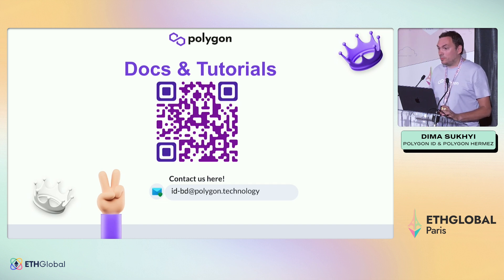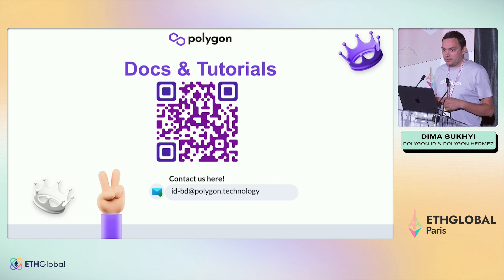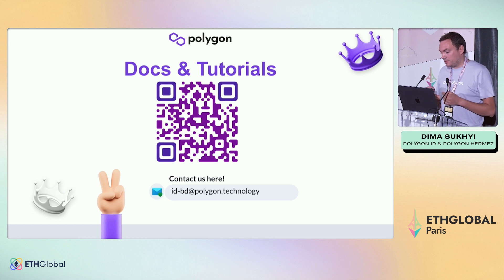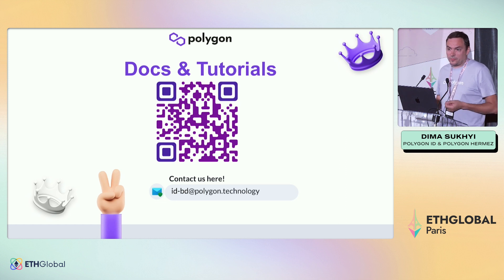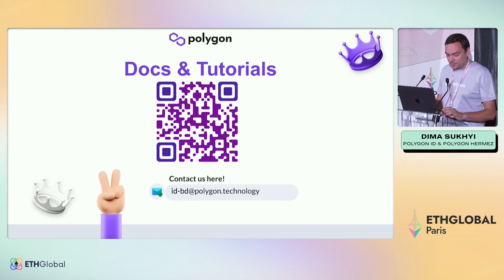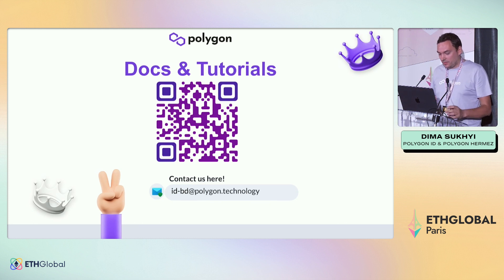Show time. We will start with the schema builder. We'll build our schema, then create a credential, fetch it to our phone, and perform verification with zero-knowledge proof verification in the background.